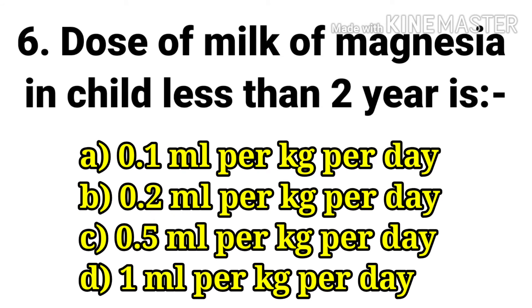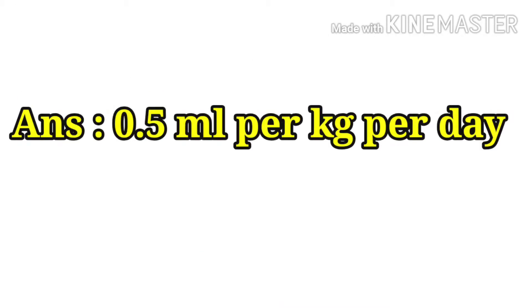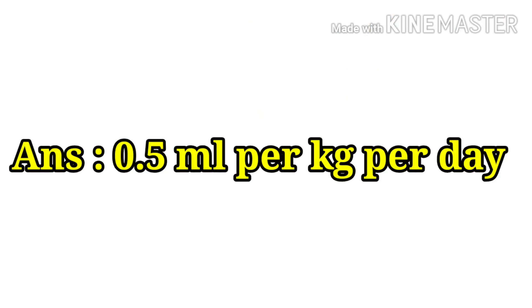The dose of milk of magnesia in a child less than 2 years — options are 0.1 ml per kg per day, 0.2 ml per kg per day, 0.5 ml per kg per day, and 1 ml per kg per day. The answer is 0.5 ml per kg per day. Milk of magnesia is a standard effective treatment for constipation.